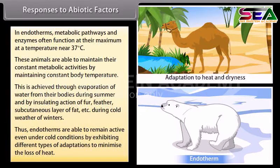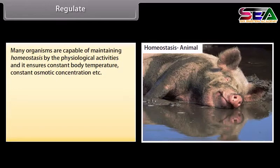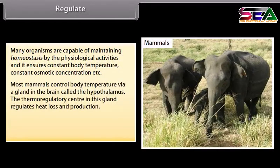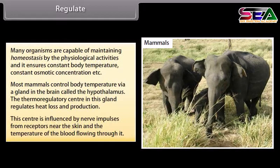Endotherms are able to remain active even under cold conditions by exhibiting different types of adaptations to minimize heat loss. Many organisms maintain homeostasis through physiological activities, ensuring constant body temperature and constant osmotic concentration. Most mammals control body temperature via a gland in the brain called the hypothalamus. The thermoregulatory center in this gland regulates heat loss and production, influenced by nerve impulses from receptors near the skin and the temperature of the blood flowing through it.